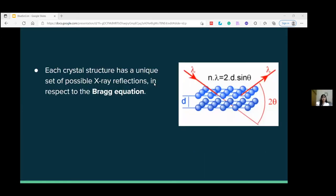The Bragg equation allows us to measure the spacing between different layers of atoms. n times lambda equals 2d sin theta. Since each crystal has a unique set of possible X-ray reflections, this information tells us what kind of mineral or rock it is.